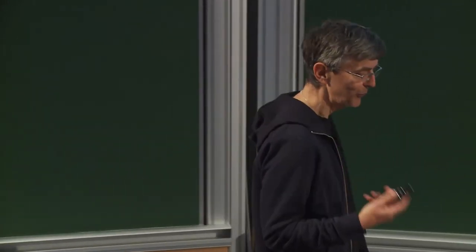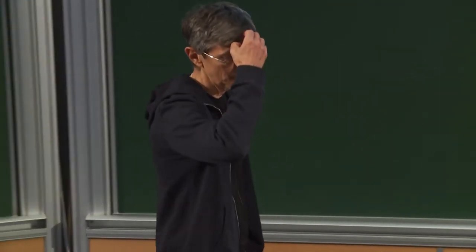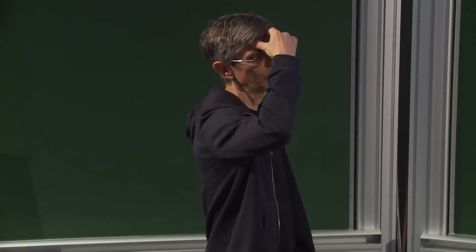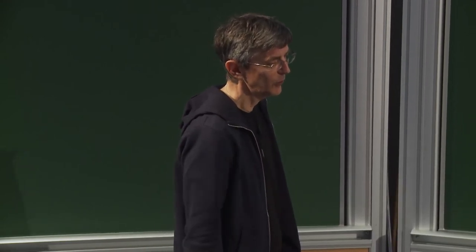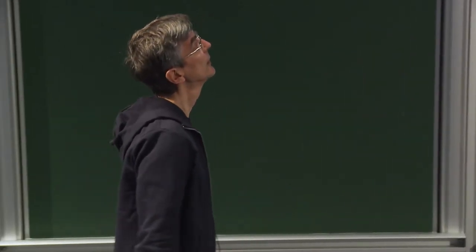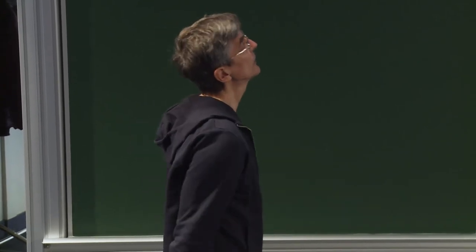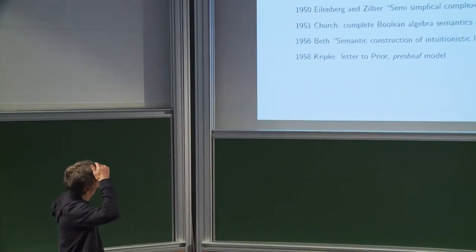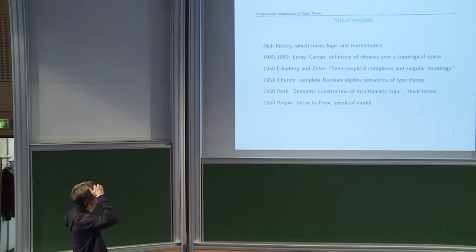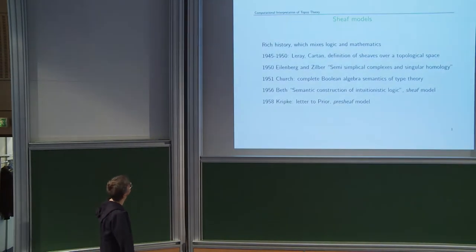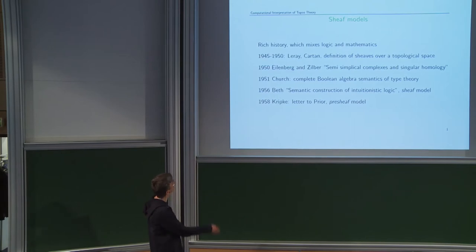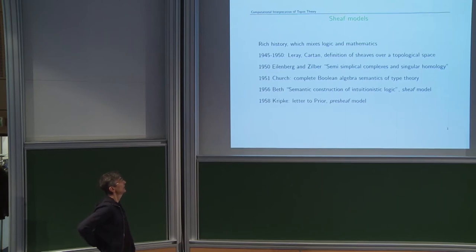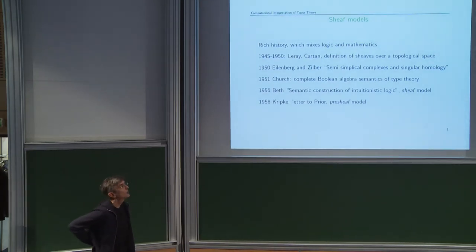This talk will be from the point of view of a logician. I will talk only about Grothendieck topos and sheaf models. What's fascinating is that the history of this subject mixes logic and mathematics. The definition of sheaves originally comes from mathematics — the first example of a pre-sheaf model is actually the paper of Eilenberg and Zilber, which is a pre-sheaf on a category of simplicial sets.